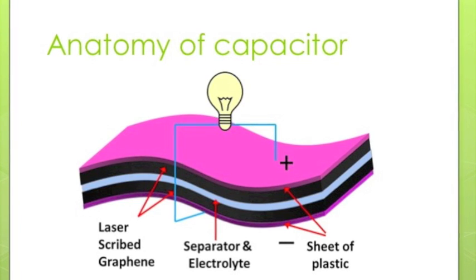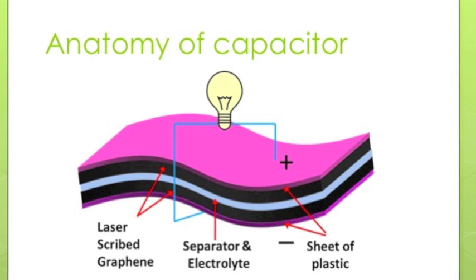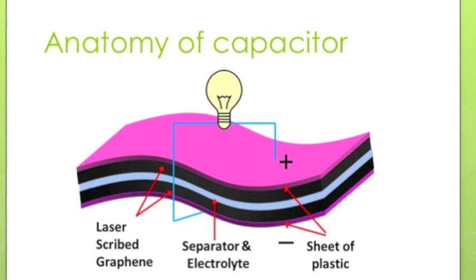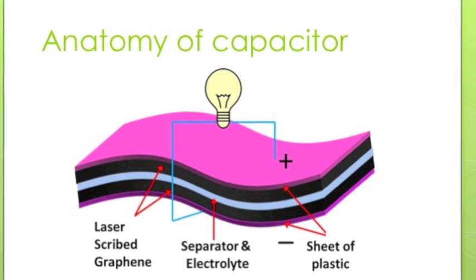In the figure, two laser-scribed graphene sheets separated by an electrolyte and encased in a plastic sheet form a graphene-based supercapacitor.